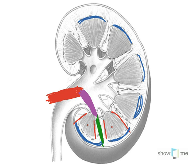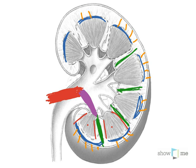The arcuate arteries emerge on top of the pyramids, and between each of them are the interlobar arteries. Coming off of these, depicted in orange, are the cortical radiate arteries, which radiate into the renal cortex. These are very important because the afferent and efferent arterioles associate here as they come into the glomerular capsules and begin filtration. To summarize: red is the renal artery, purple the segmental artery, green the interlobar arteries, blue the arcuate arteries, and orange the cortical radiate arteries.